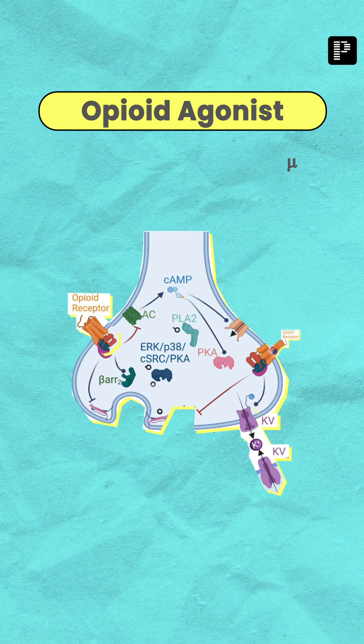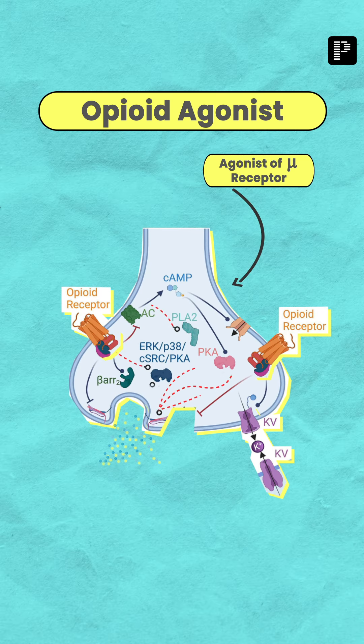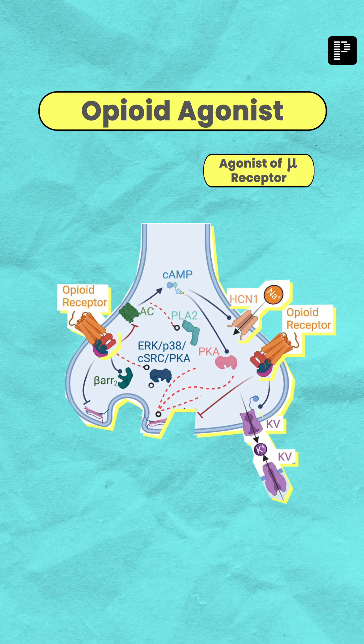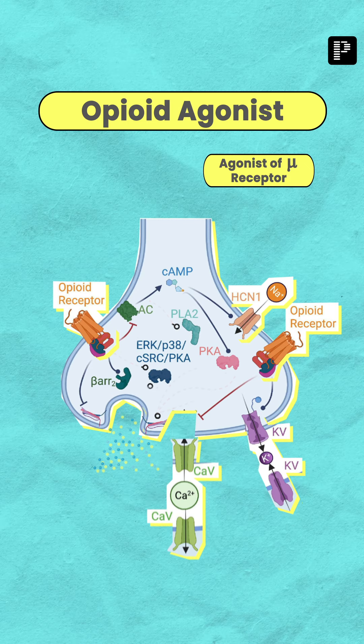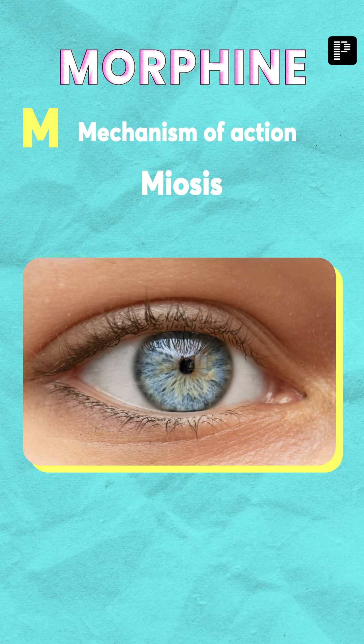Morphine is an opioid agonist — particularly it's an agonist of the mu receptor. When you activate the mu receptor, which is a type of Gi-coupled receptor, it will allow the exit of potassium, it will not allow the entry of calcium, and it also decreases sympathetic outflow and decreases substance P, leading to analgesia.